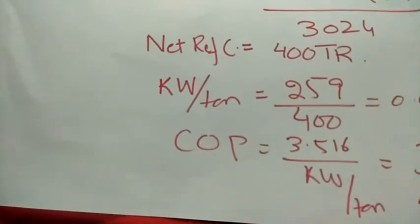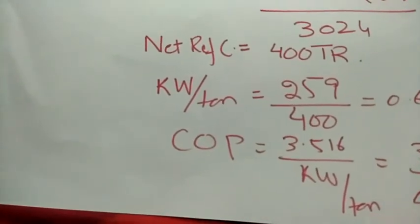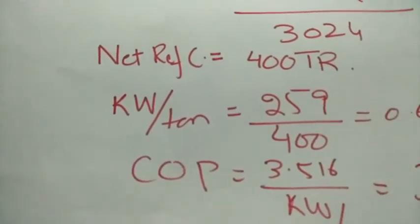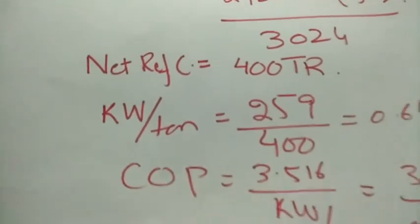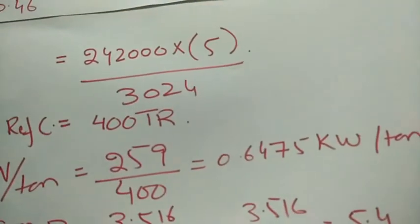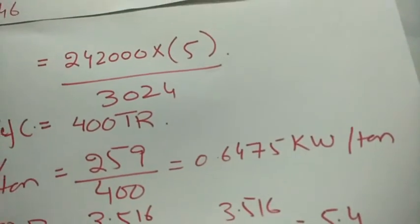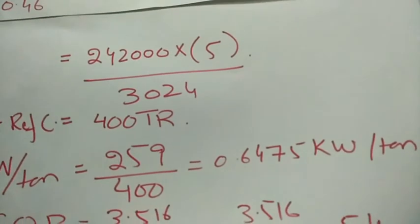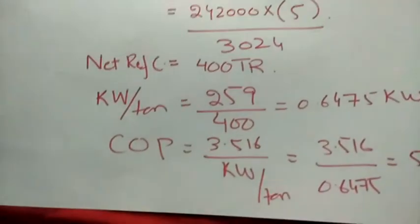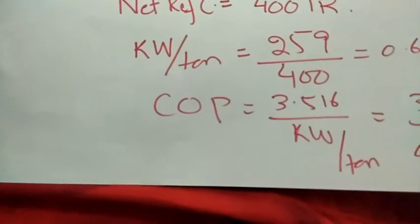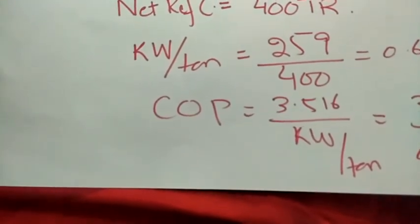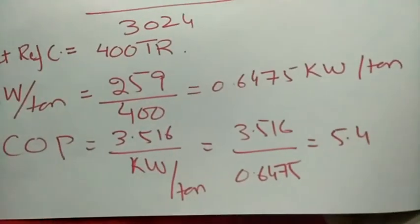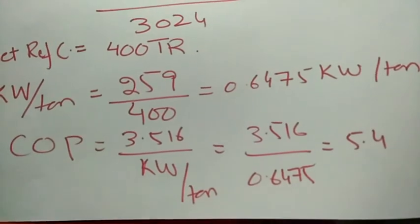Now, kilowatt per ton = rated compressor power ÷ net refrigeration capacity = 259 ÷ 400 = 0.6475 kW/ton. That means for 1 ton of refrigeration we need 0.6475 kilowatts of power. COP = 3.516 ÷ kilowatt per ton = 3.516 ÷ 0.6475, giving a COP of approximately 5.4 for this electric chiller.